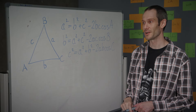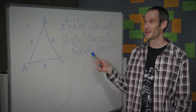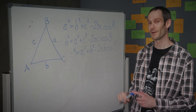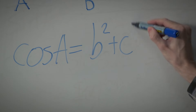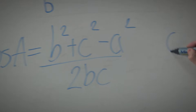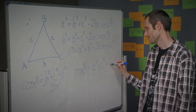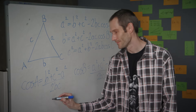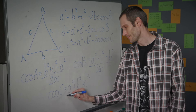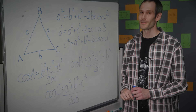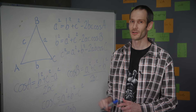These three equations will allow us to solve for a triangle if given two sides and an enclosed angle. If we rearrange these equations for cosine of A, cosine of B, and cosine of C, we get three additional equations that will allow us to determine the angle in a triangle if given all the sides of the triangle and no angles.